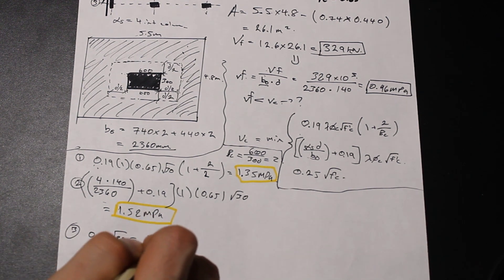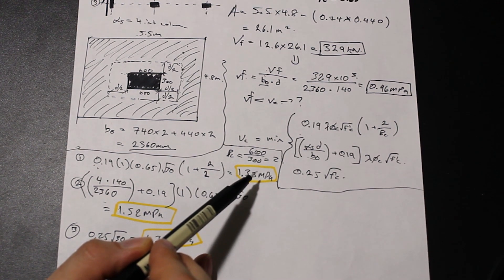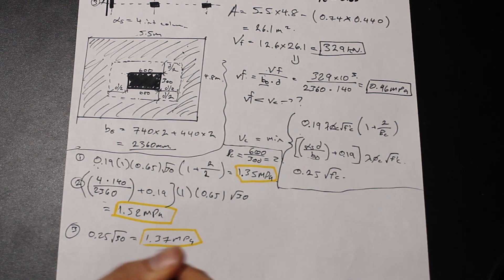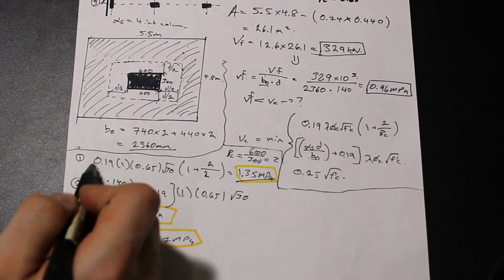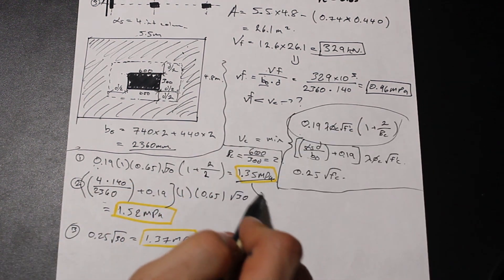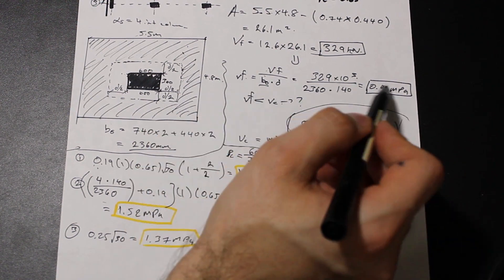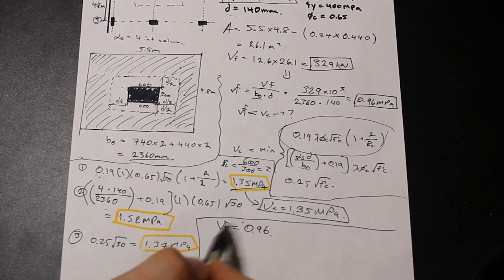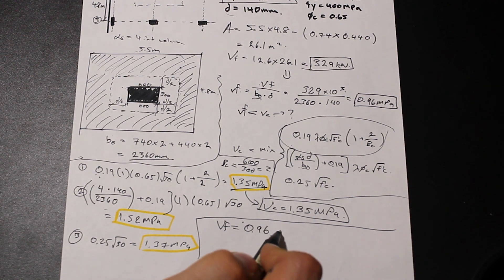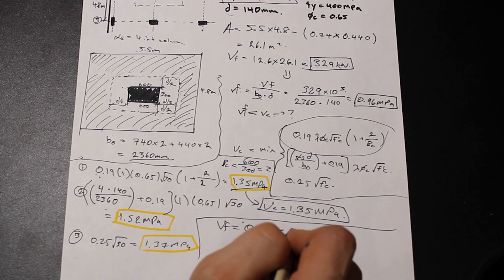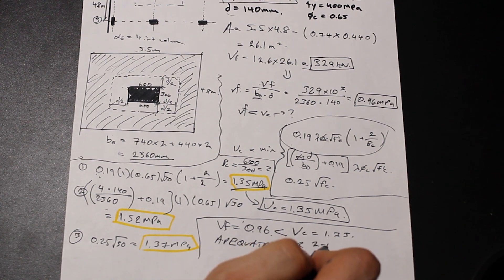So vc = minimum of 1.35, 1.52, and 1.37 MPa. The first equation governs — that's the effect of the column shape — giving vc = 1.35 MPa. Comparing: vf = 0.96 MPa < vc = 1.35 MPa. Therefore, this slab is adequate for two-way punching shear.